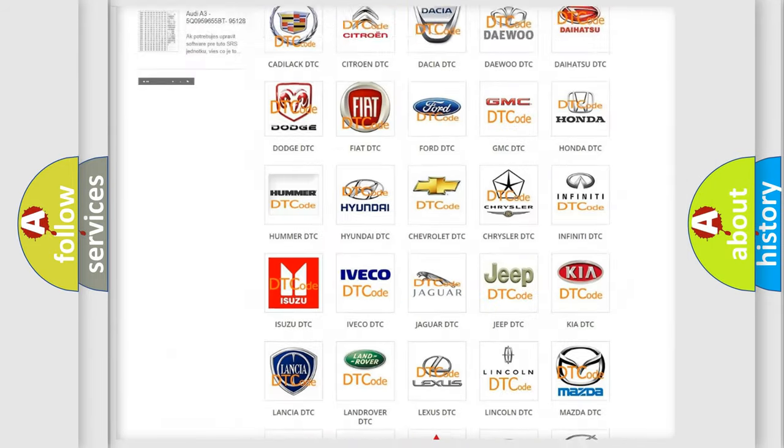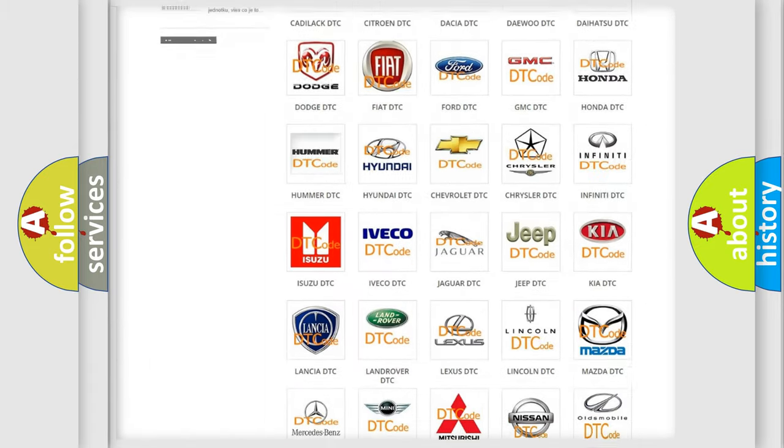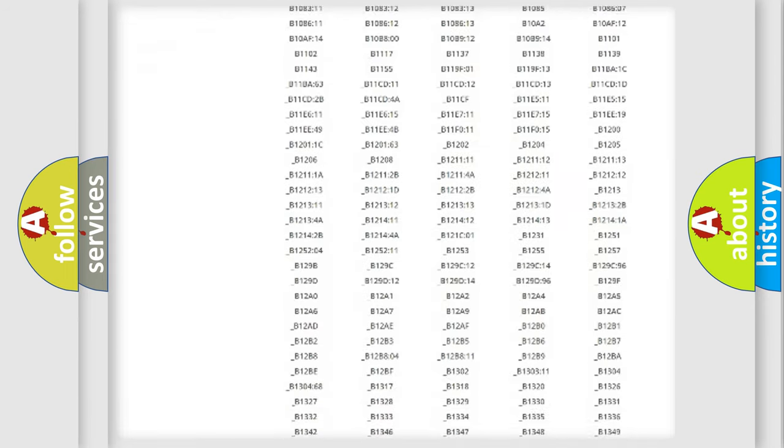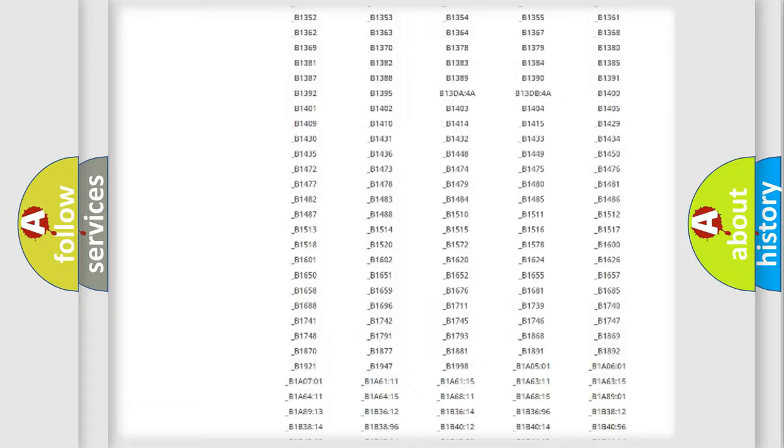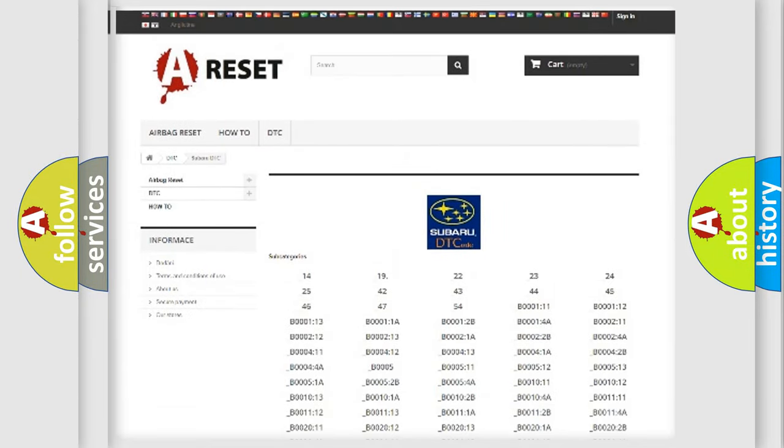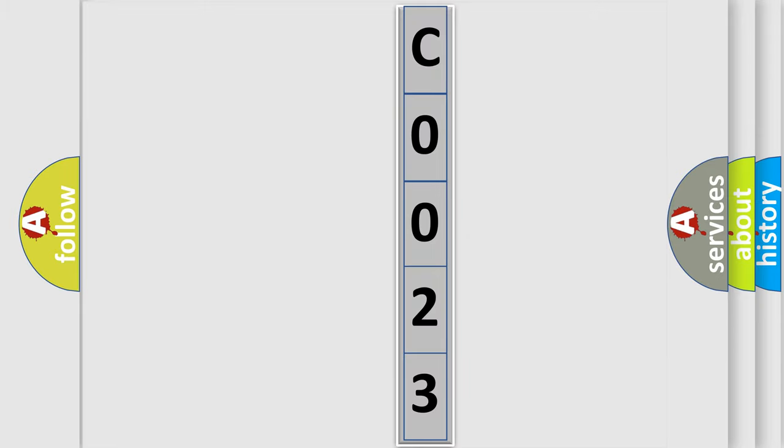Our website airbagreset.sk produces useful videos for you. You do not have to go through the OBD2 protocol anymore to know how to troubleshoot any car breakdown. You will find all the diagnostic codes that can be diagnosed in Subaru vehicles, and also many other useful things. The following demonstration will help you look into the world of software for car control units.